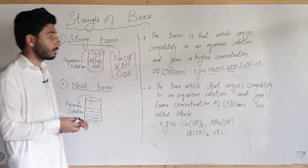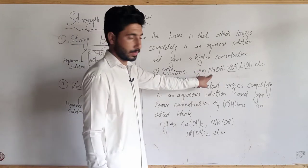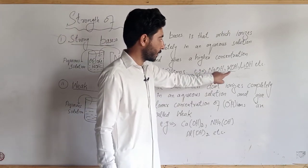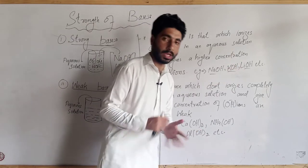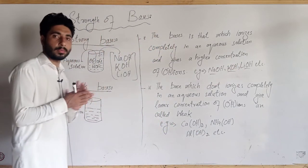Here are examples of strong bases: NaOH, KOH, and LiOH. These are examples of strong bases.